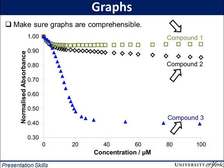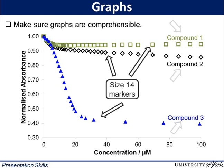A few other tricks can also make your information more digestible, such as labelling each dataset directly, as this saves the reader eye-shuttling and shape-matching between the points and the nearby legend. Also, notice the markers are quite large at size 14, and different both in shape and colour.